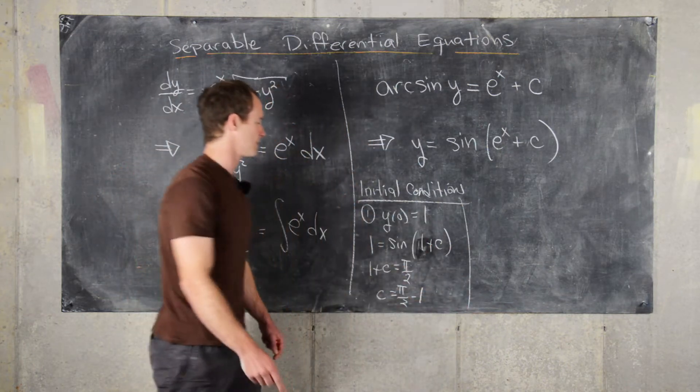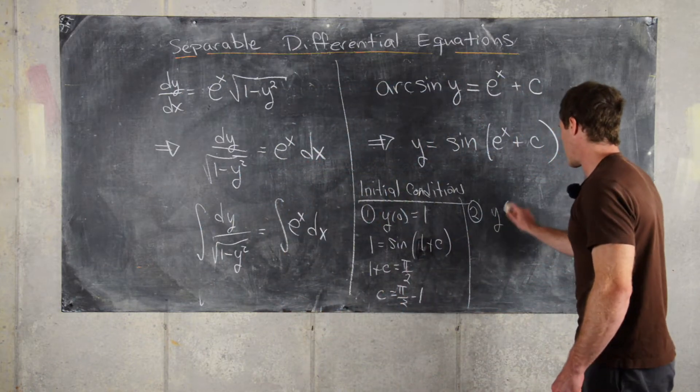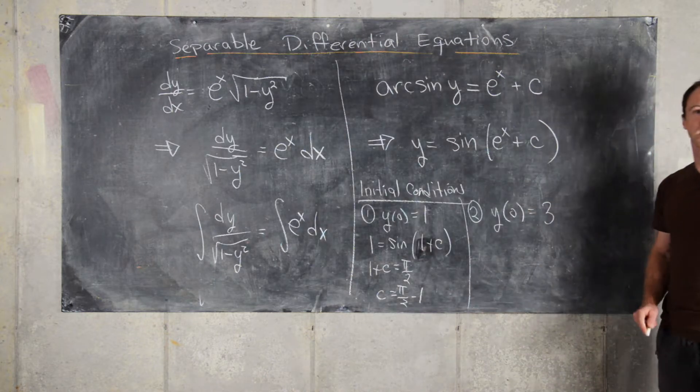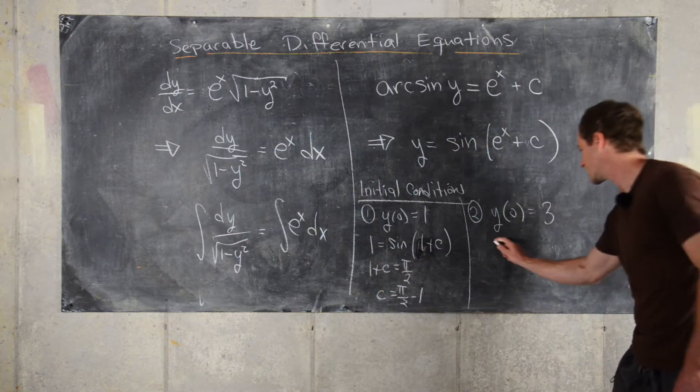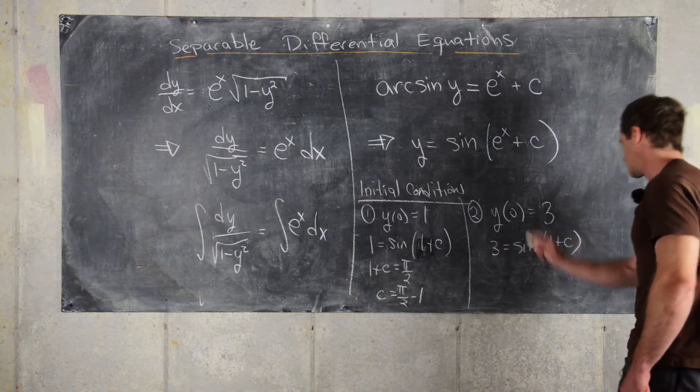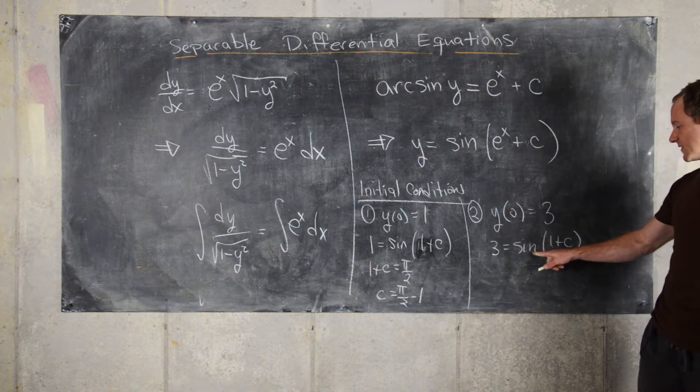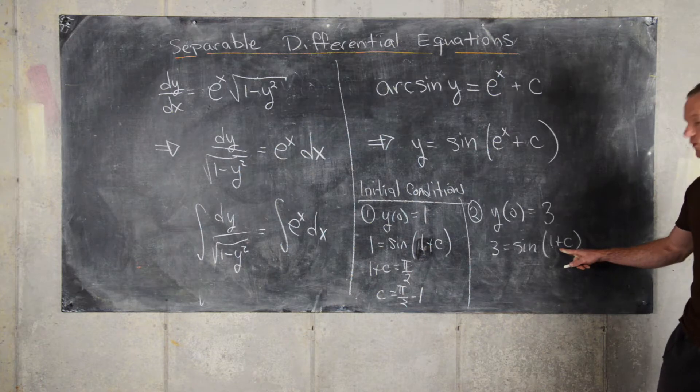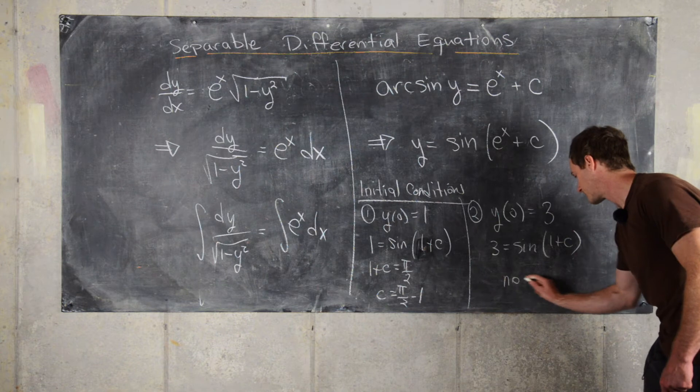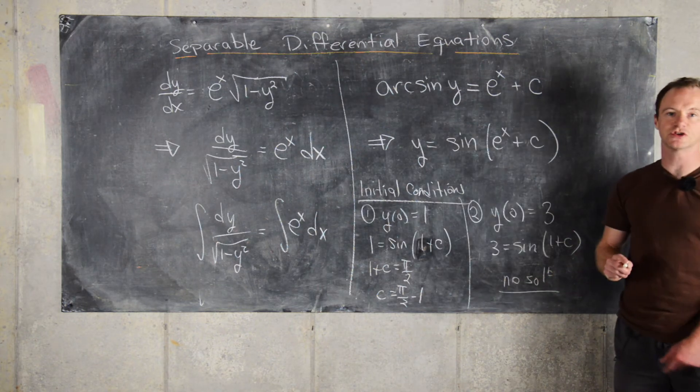So now let's look at another one. Let's say we have the initial condition y of 0 equals 3. So that means we need to solve the equation 3 equals sine of 1 plus a constant. But if you remember the facts about trig functions, the sine function is always between negative 1 and 1, but 3 is obviously larger than 1, so there's no solution here.